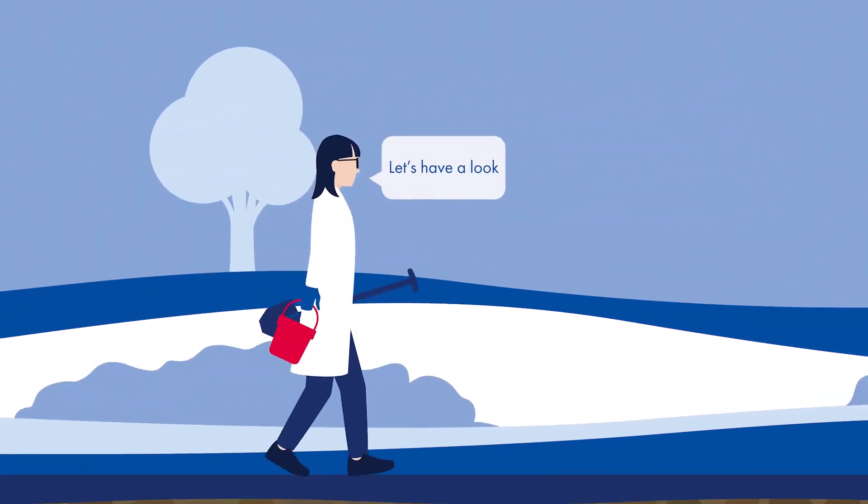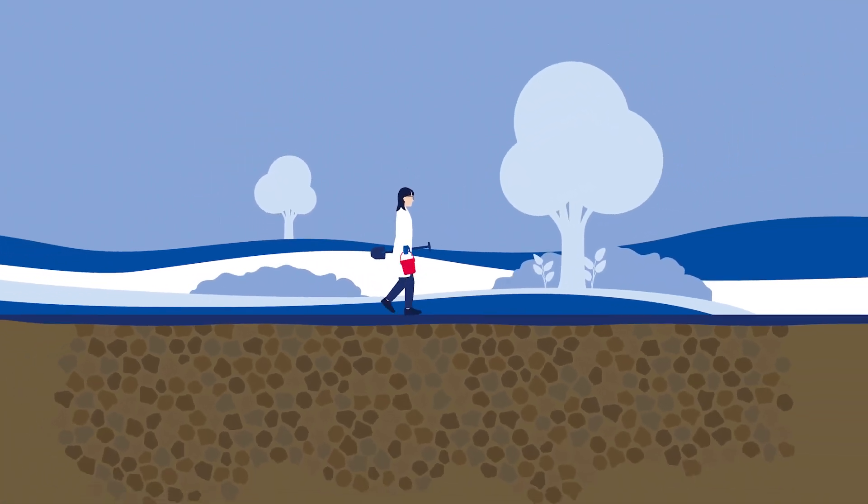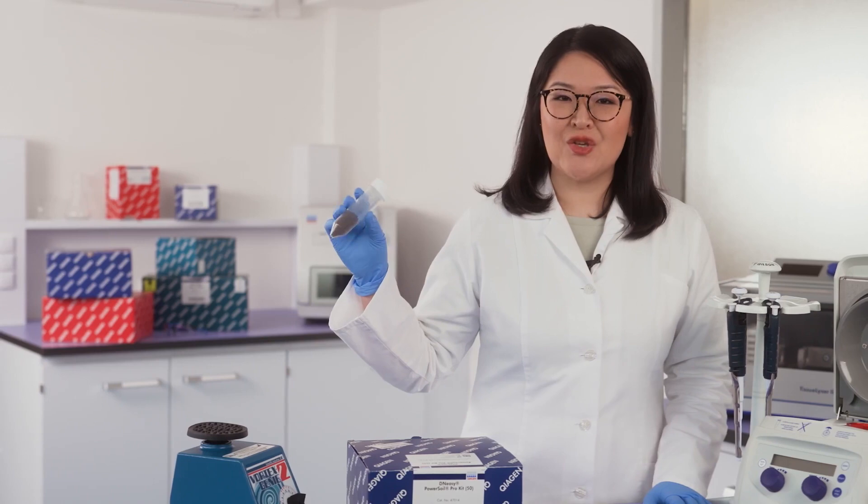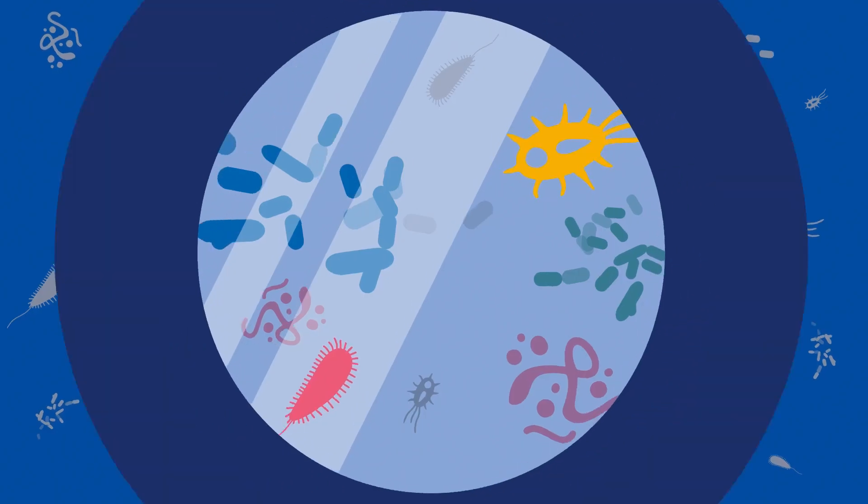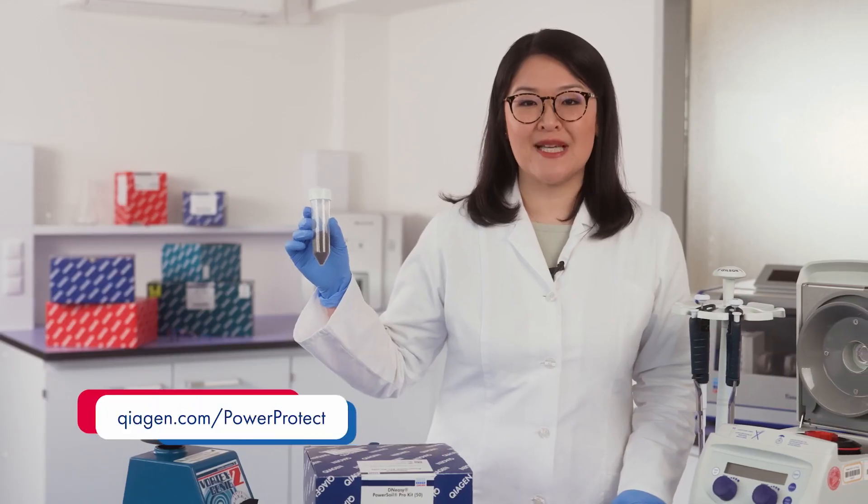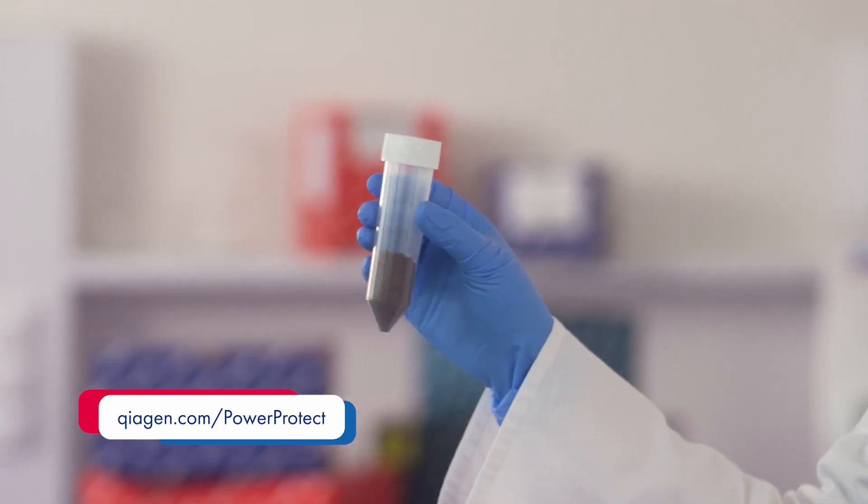Source samples collected from the same source have variable microbial load and different organic makeup. After collection, use your sample as soon as possible, as prolonged storage will affect the microbial composition. For later use, store it in PowerProtect DNA/RNA or put it in the freezer.